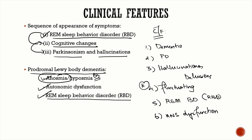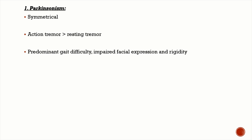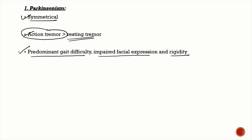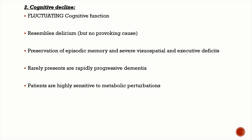The parkinsonism in Lewy body dementia, unlike idiopathic parkinsonism, is going to be symmetrical. Action tremor is more predominant and more common than resting tremor. The patient will also have predominant gait difficulty, impaired facial expression, and rigidity.